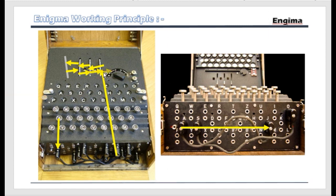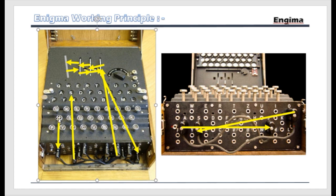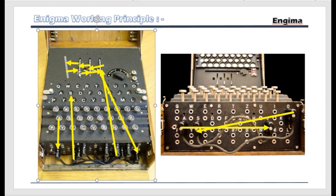After it comes back to the first rotor, the current goes back to the plug board. Suppose now it's the letter O coming out of the first rotor. Whenever it goes back to the plug board, as you can see here, O is connected with S. So after it comes to the plug board and since O is connected with S, from S the electric current goes to the light board section, and the letter S lights up. So: you press A, it goes to the plug board, from the plug board it goes to J, then it goes through every rotor — each time the letters change — after the reflector it comes back through all the rotors, again to the plug board, and from the plug board O is connected with S, so the letter S lights up. This is how Enigma actually works.